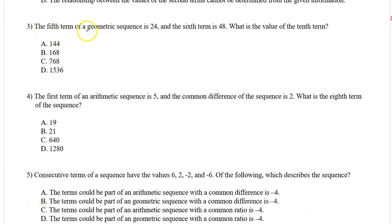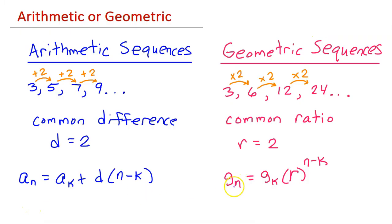Number 3. The fifth term of a geometric sequence is 24, and the sixth term is 48. What is the value of the tenth term? The nth term of a geometric sequence is given by g_n equals g_k times r to the n minus k power, where r is the common ratio, and g_k is term k, just some other term that you know.